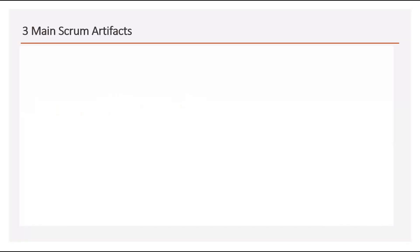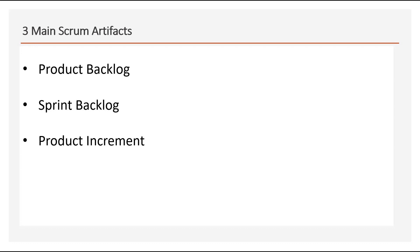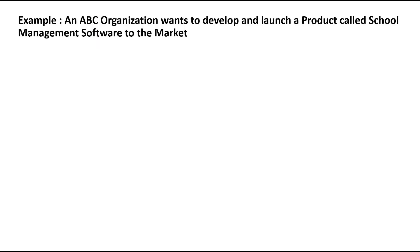The 3 main scrum artifacts are Product Backlog, Sprint Backlog, and Product Increment. Now let us understand this with an example. Here, you can see that an organization called ABC wants to develop and launch a product called School Management Software to the market.